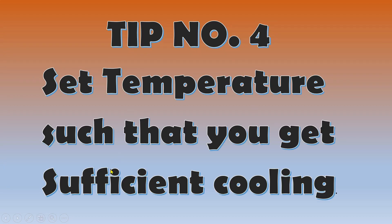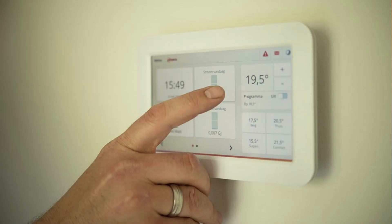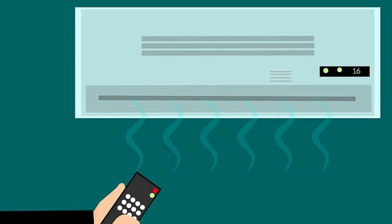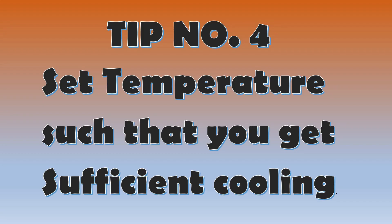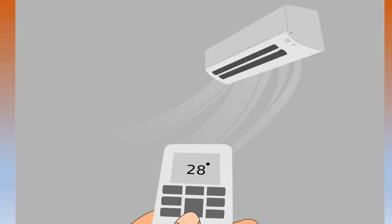Tip number 4: Set temperature such that you get sufficient cooling. In the table we saw, the electricity bill for switching on an AC for one hour is calculated at full efficiency — that is, at 18 degrees Celsius. If we keep a higher temperature or eco mode on, there will be less power consumption comparatively. But sometimes what happens is people start the AC and set it to 18 degrees, then after some time due to excessive cooling they switch it off, and again when the temperature rises they switch on the AC at full efficiency. So in an inverter AC, you should set the temperature to what you are comfortable living in, with no need to switch it off. In this way, it will work efficiently with optimal power consumption.